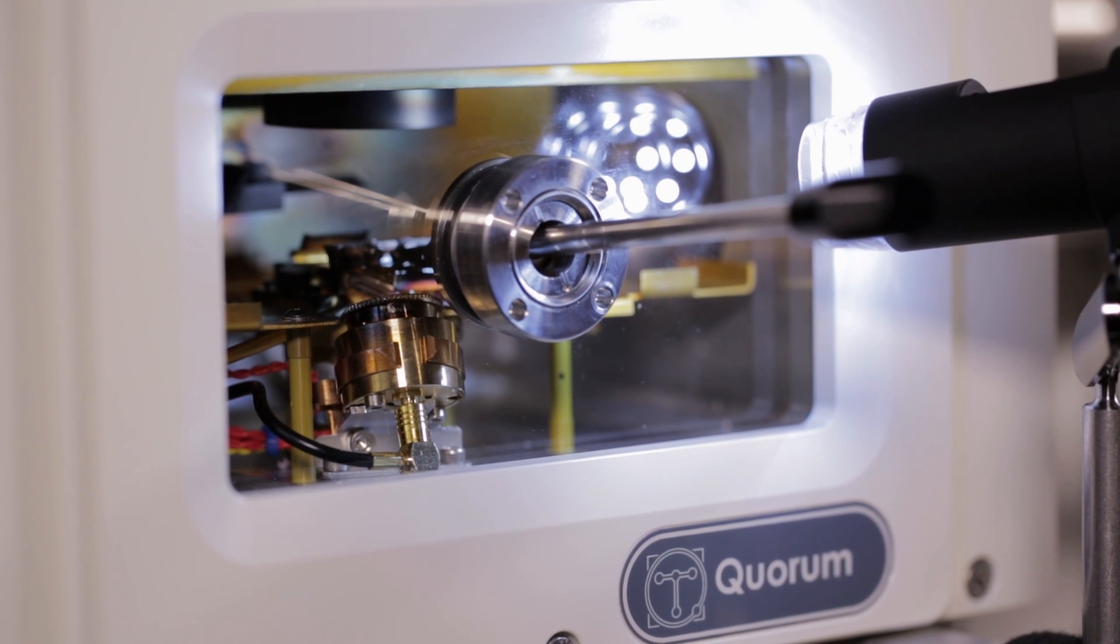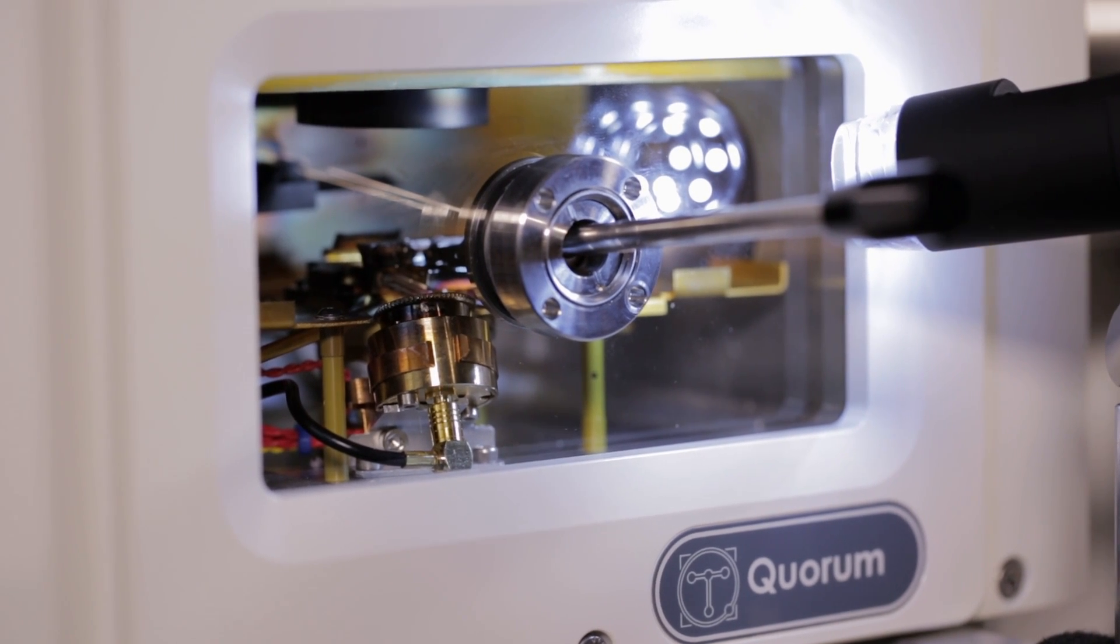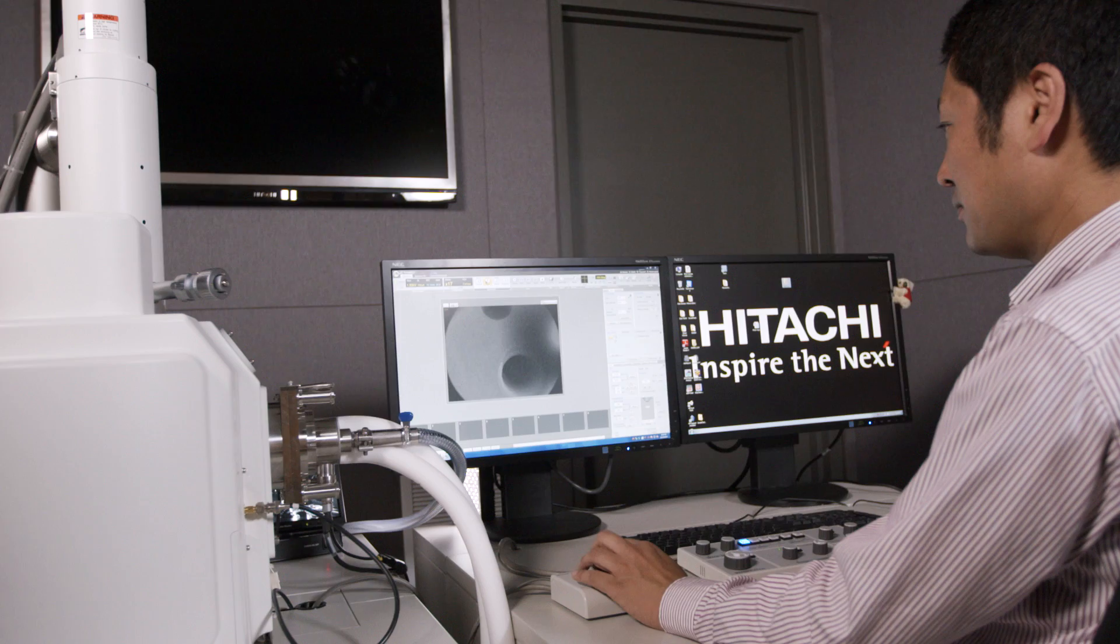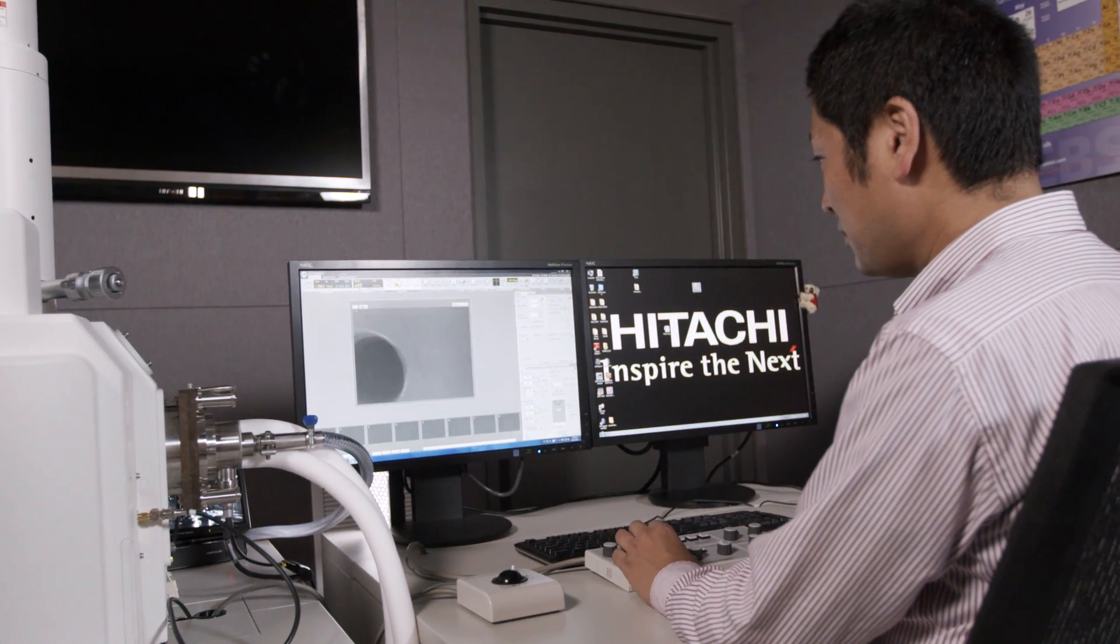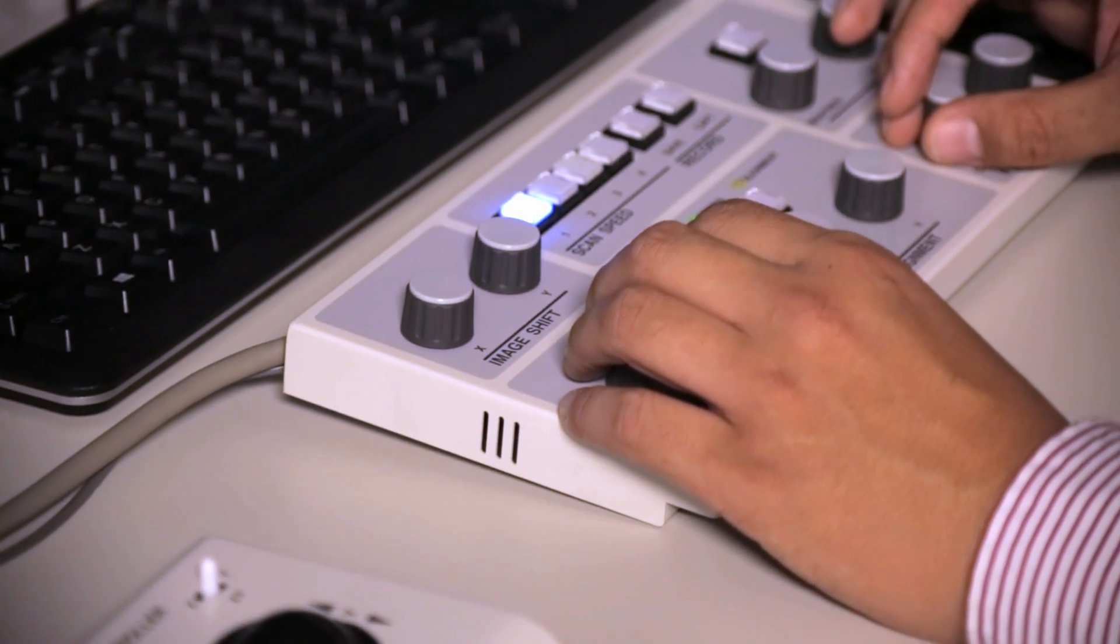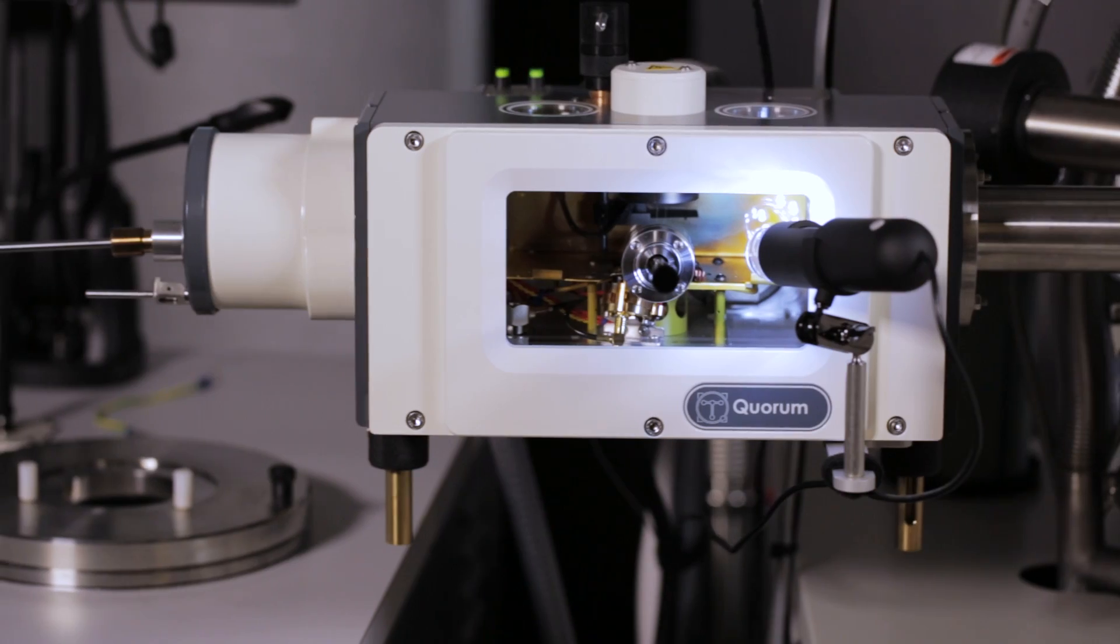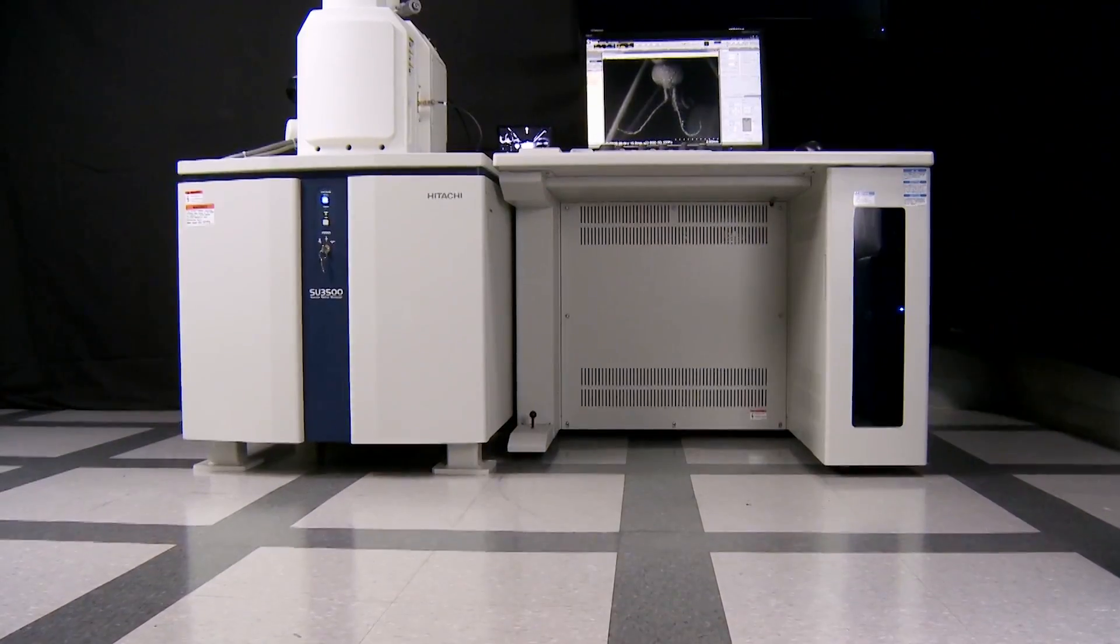Cryopreparation techniques for use in electron microscopy have become essential for the observation of wet or beam-sensitive specimens in their natural and hydrated state, eliminating the need for conventional preparation methods such as chemical fixation and critical drying.